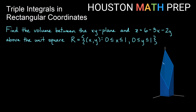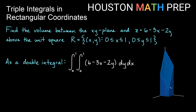For our first example, this is actually a volume we worked out in our double integral video. We want to find the volume between the xy plane and the plane z equals 6 minus 3x minus 2y, above the unit square from 0 to 1 in both the x and y directions. When we set this up as a double integral before, we put our surface as the height function inside the integral, then for dy dx or dx dy, the unit square gave us 0 to 1 for both variables.